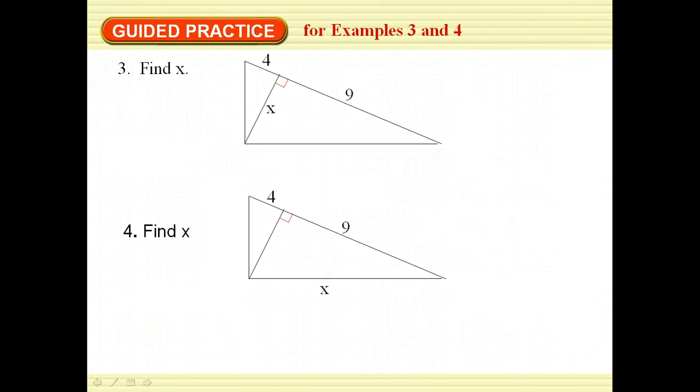So here's guided practice for you to try. I urge you to pause the video and try them on your own before you see. Okay, X is the altitude, so it's going to be the geometric mean between the two parts. So in this case, that is the square root of 36, which is 6. In this other one, what we have is the geometric mean between the part of the hypotenuse that's closest to the leg we're looking for, and the entire hypotenuse, which in this case is 13. So X comes out to be approximately 10 points.